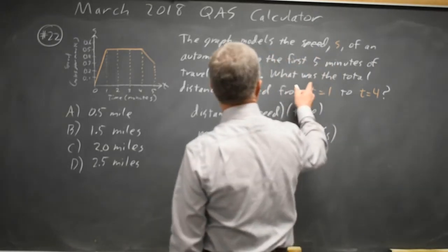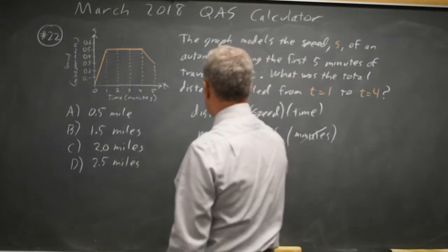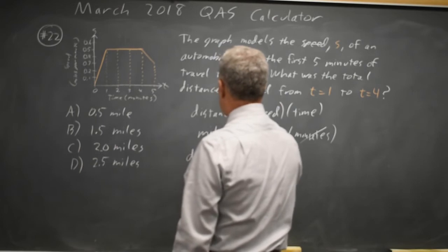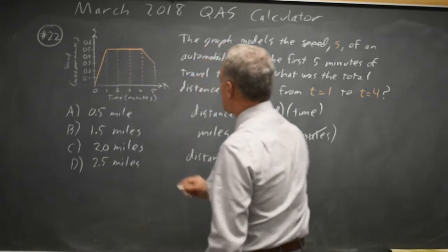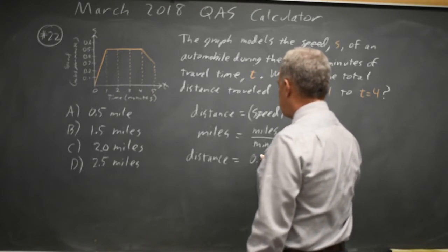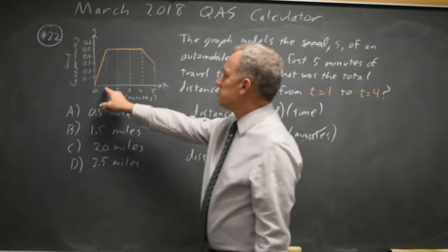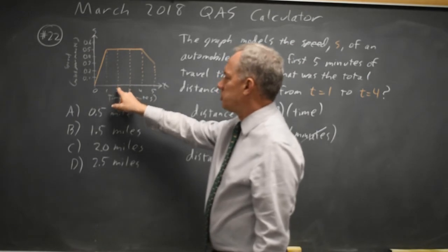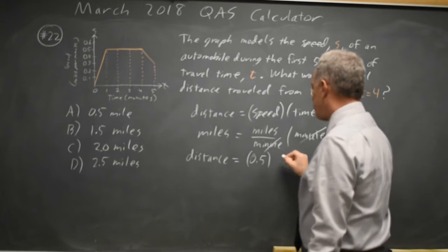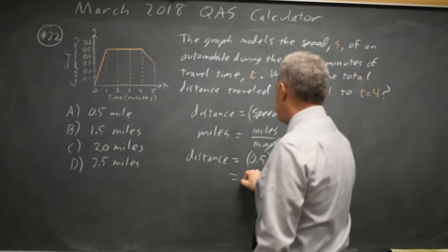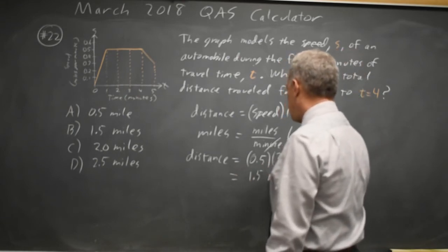So they're asking for the total distance traveled. And our speed from time 1 to time 4 is constant at 0.5. And our minutes, 4 minus 1 is 3. It's 1 minute from 1 to 2, 1 minute from 2 to 3, and 1 more minute from 3 to 4 for a total of 3 minutes. So our distance is 1.5 miles. Choice B.